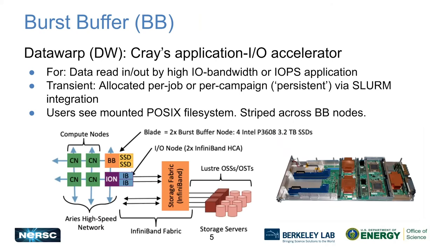The Burst Buffer has been mentioned quite a few times. It's provided by Cray as a way of accelerating IO — it stores things on an SSD-based file system, and creates these file systems on the fly for jobs. This means it isn't a huge shared file system, so it doesn't have all the metadata contention with others. This leads to more consistent performance, and also better performance for both high IO bandwidth applications and metadata-limited applications.